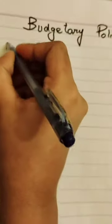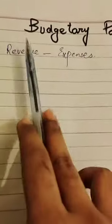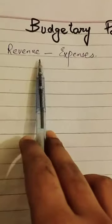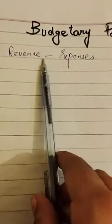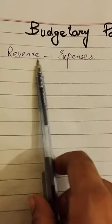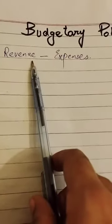On one side we have revenues, and on the other side we have expenses. We are going to compare them at the economic level — how much the government spends versus what it earns.